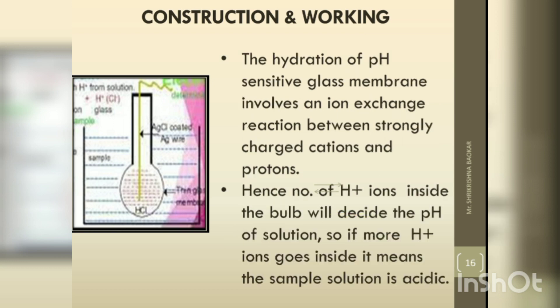The hydration of the pH-sensitive glass membrane involves an ion exchange reaction between strongly charged cations and protons. The number of H+ ions inside the bulb decides the pH of the solution. If more H+ ions go inside, it means the solution is acidic.